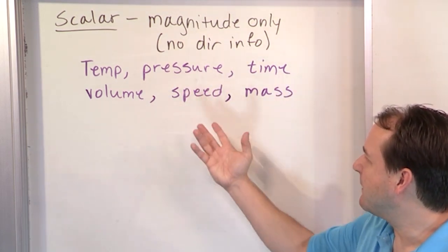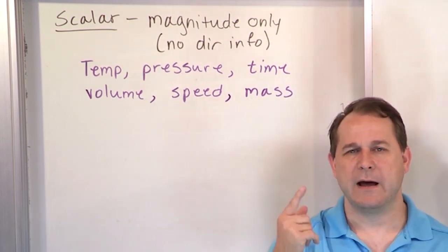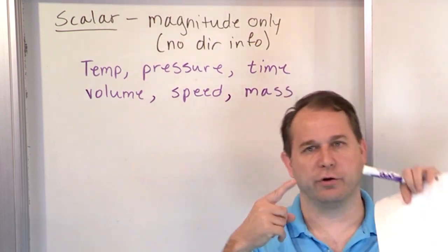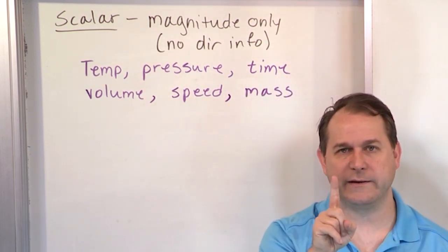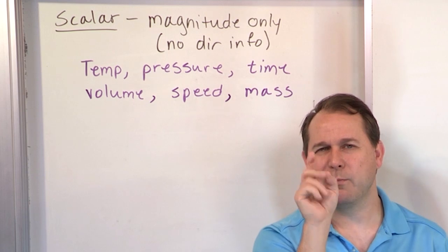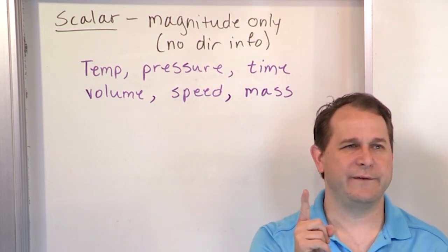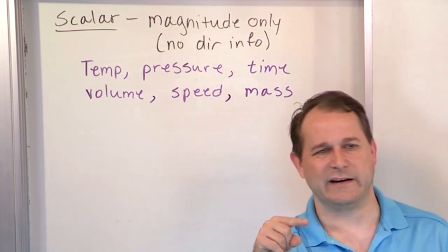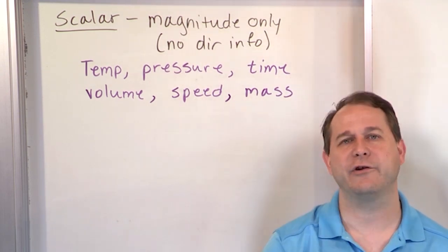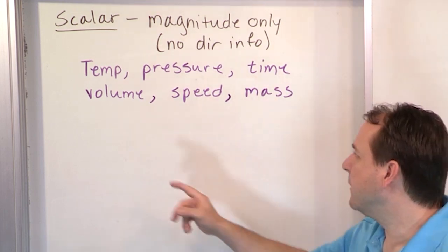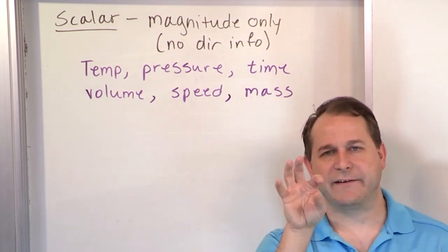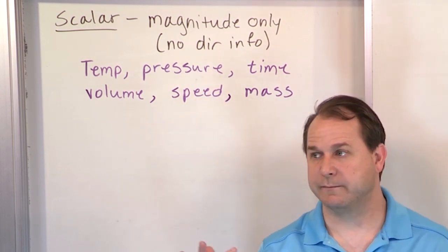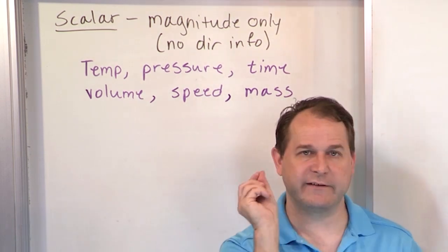Pressure — you might think pressure has a direction, but at this point in space the pressure of the gas is acting in all directions pointing into this point. So at this point, 34 newtons per square meter or whatever the pressure is, it's not pointing any particular direction; it's a value at a point. Volume: if I have a volume of gas here in this little space, maybe it's 34 cubic centimeters, but the volume is not pointing any direction — it's just a value.